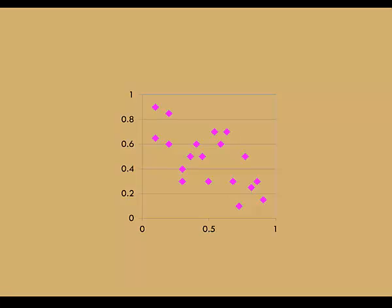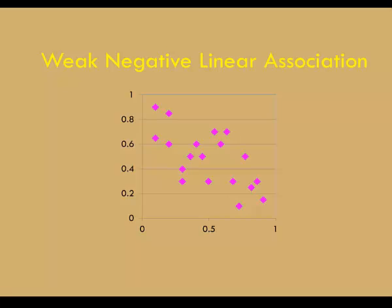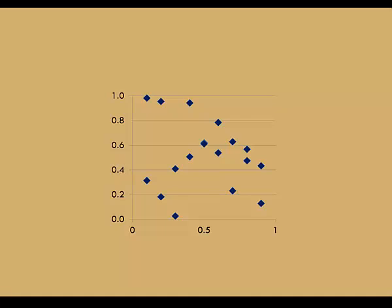Here we have a downward trend left to right — that's a negative association. In this case, it's a weak negative linear association. And finally, in this example, it's hard to determine either a pattern or a direction. So we say that there is no apparent association.